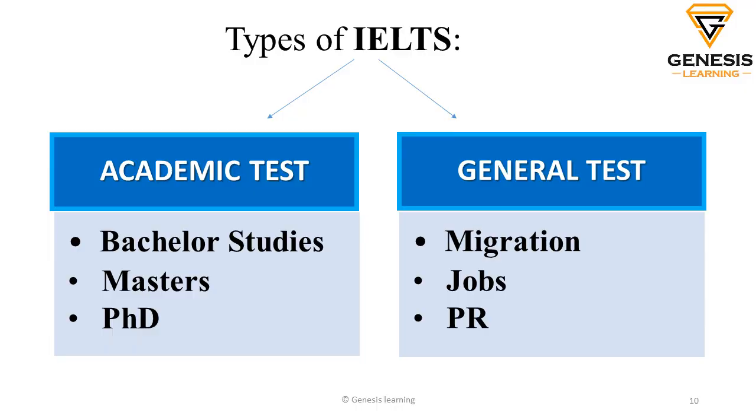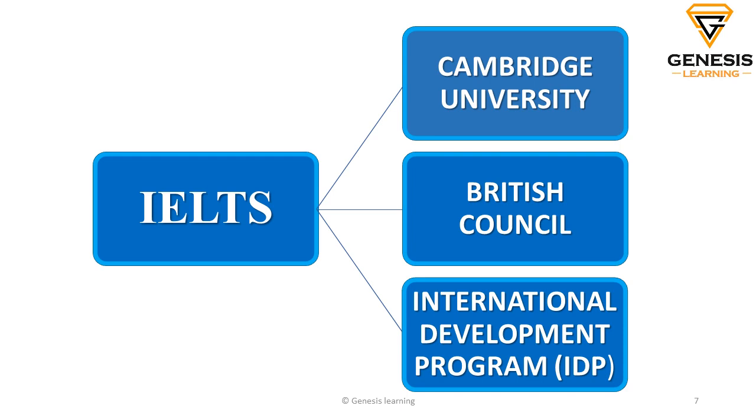There are two types of the IELTS examination. First, the academic version, which is for students who are looking to study outside the country. Then you've got the general version, which is for people looking for jobs in Western or English-speaking countries, or just for migration purposes. The first thing you have to understand is which type of IELTS exam you need to write — either the academic or the general version. You can book your examination either through the British Council or the IDP. It doesn't matter where you book it because the syllabus, the testing, and the question papers are all the same.